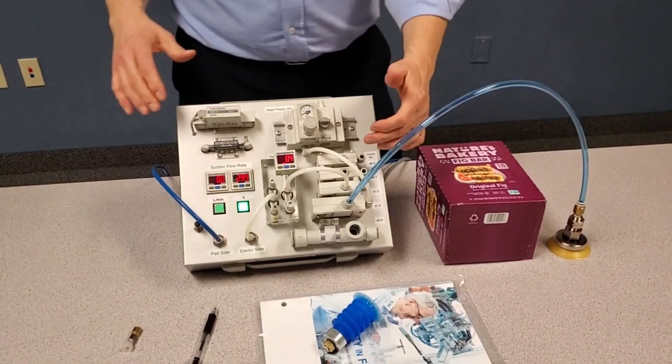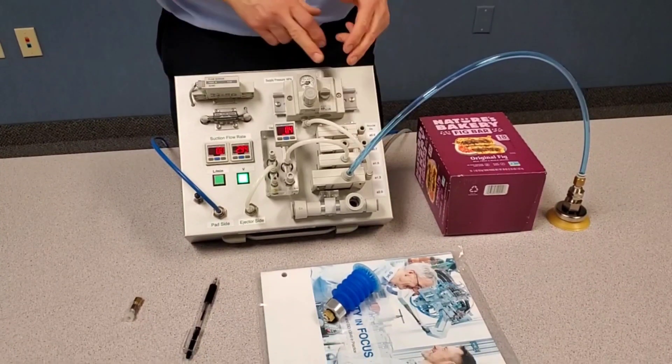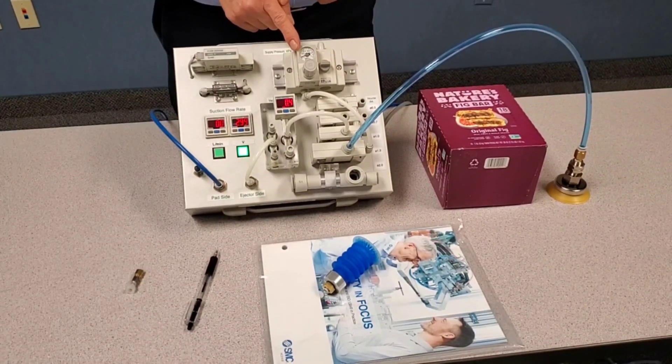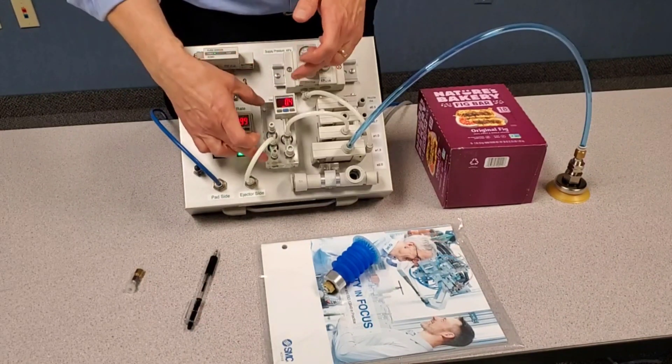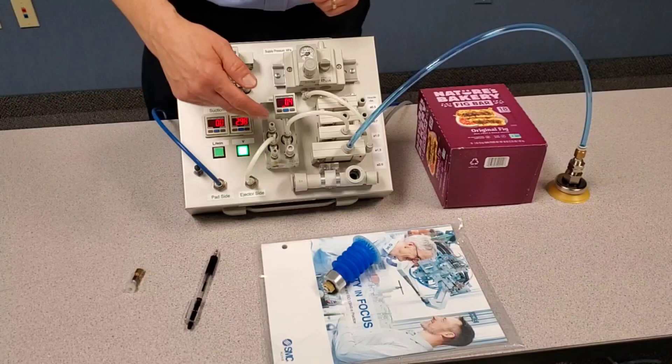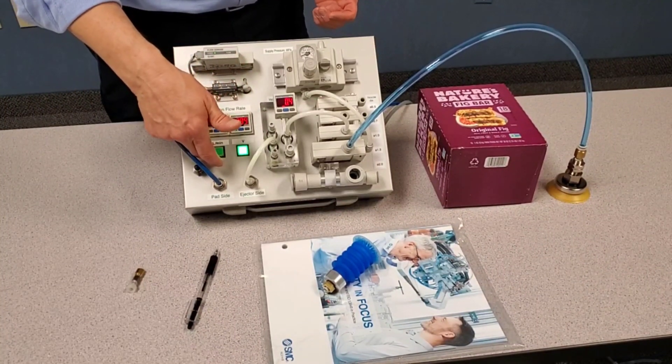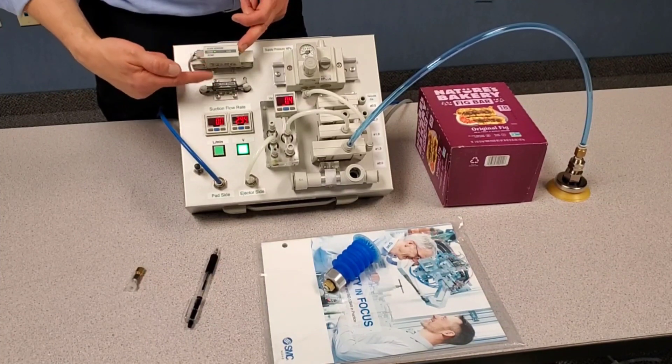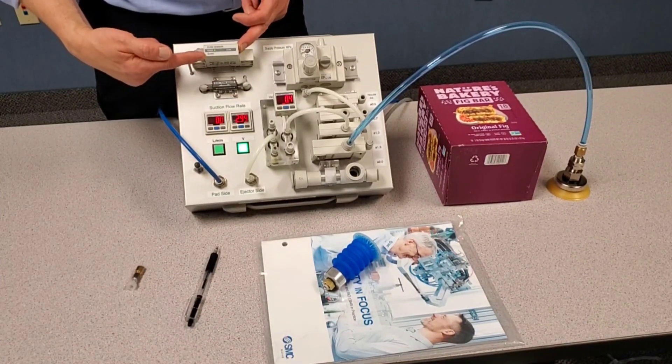So what I've demonstrated here is we have a single stage venturi that's controlled by a two-port manual valve, a pressure regulator. We're coming through this manifold block, which reads out vacuum pressure. Behind the panel, there are two solenoid valves, normally closed. They are controlling flow through one or the other of these flow meters.